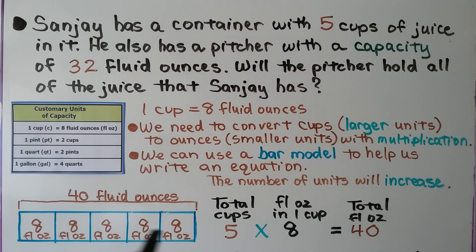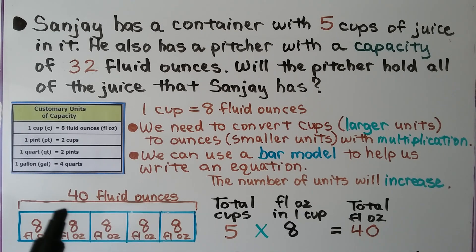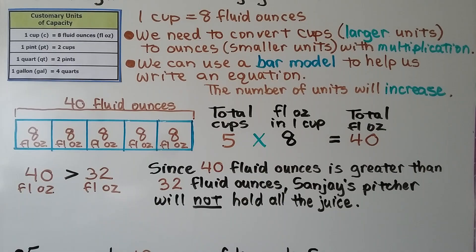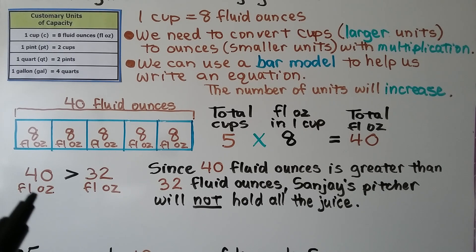We can use a bar model to help write an equation. He has five cups, so we make five boxes with eight fluid ounces in each. Five cups times eight fluid ounces per cup equals 40 fluid ounces. Since 40 fluid ounces is greater than 32 fluid ounces, Sanjay's pitcher will not hold all the juice.